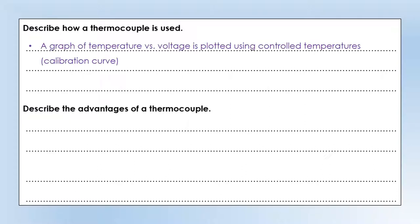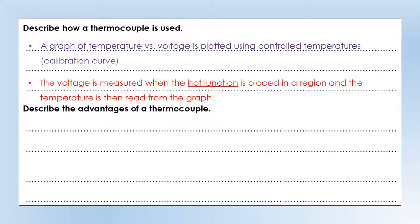First of all let's describe how we use it and then we can talk about its advantages. So what happens is when we've built our thermocouple we will plot a graph of temperature versus voltage. So we'll use some known temperatures to plot this graph. That's often called a calibration curve. And then you measure the voltage and the temperature can then be read off the graph. So you put the hot junction of your thermocouple into something you want the temperature of, read the voltage, go to your graph and it's at this temperature. So we essentially use the graph that you've created with the known temperatures.